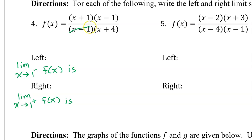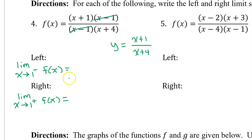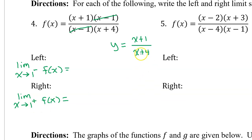Because the x minus 1 in the denominator cancels out with the x minus 1 in the numerator, we have a hole at x equals 1. Around a hole, the limit from the left and the limit from the right will both equal the same constant — the y value of the hole. We can find that y value using the related equation y equals x plus 1 over x plus 4, which is just f of x after canceling out the x minus 1. Plugging in x equals 1 gives 1 plus 1 over 1 plus 4, which is two-fifths.